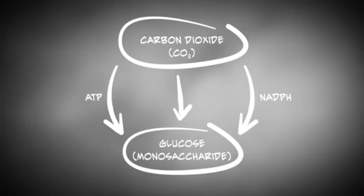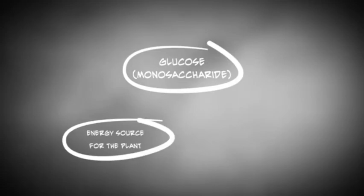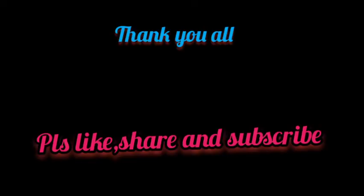Glucose is the primary product. It serves as an energy source for the plant itself. In the form of polymers such as starch, it is also an energy source for animals and human beings. By producing oxygen and capturing energy from inorganic compounds to produce organic compounds, plants are considered to be a very important part of nature and life.